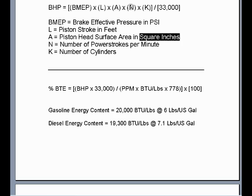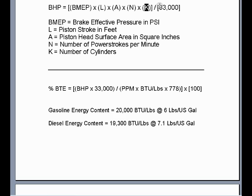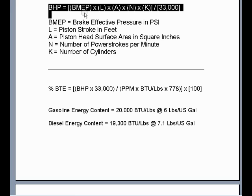Then multiply those three values times the number of power strokes per minute. On a four-stroke piston engine, there are two revolutions of the crankshaft per every power stroke, so divide the maximum torque rating RPM by two to get the number of power strokes per minute. On a two-stroke piston engine, use the RPM directly, since there is one revolution per power stroke. Then multiply by the number of cylinders. Divide all five values into 33,000 foot-pounds per minute — which equals one horsepower — to get the maximum usable horsepower output at the torque curve RPM.